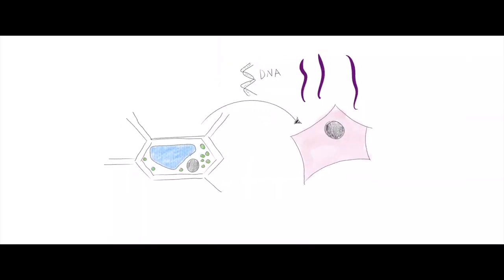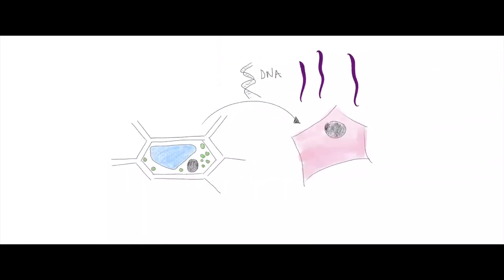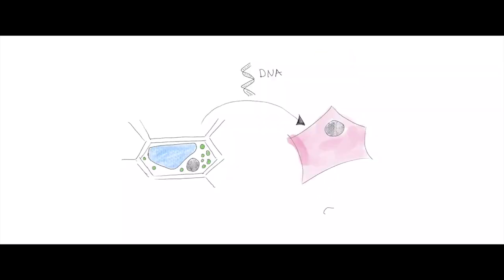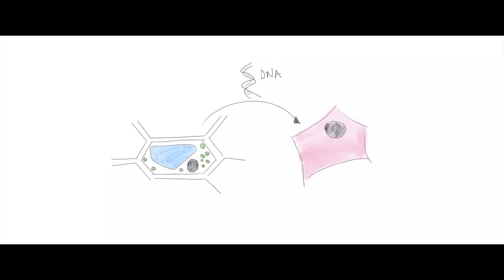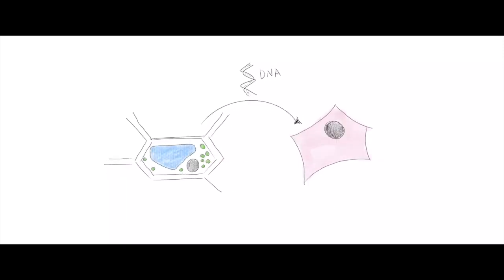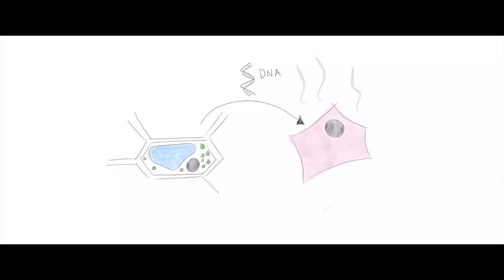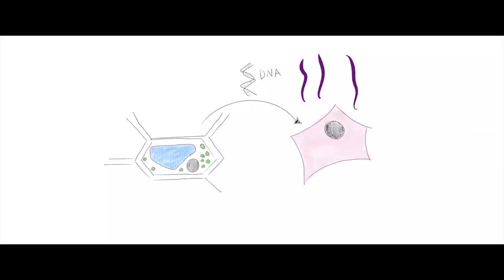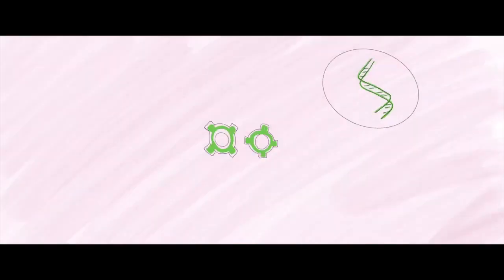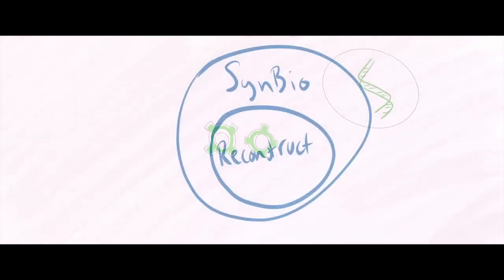For example, we could be interested in testing if we have all the basic information needed to create the scent of a flower. We can copy all the bits of information that we think are needed. Then introduce this information into animal cells and finally test if they produce the scent. If we manage to reproduce the smell, this will mean that our knowledge is complete. However, if we fail to do so, that will mean that we are missing some important pieces of the puzzle. In this last case, we can go back to the plant and look for other pieces of code that are important for the system. If we manage to obtain a functional transferred system, we can conclude that we have the minimal set of components required for the process to be functional. We call this approach reconstruction biology and it is a subfield of synthetic biology.